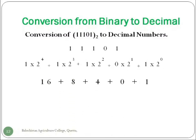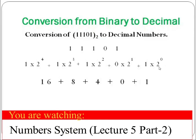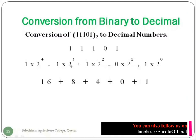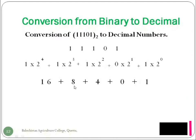So let's calculate it. In mathematics, it is a rule that any number whose power is 0 will be equal to 1. So 1 times 1 is equal to 1. 2 times 0 is 0. 2 raise to the power 2 means 2 times 2, its result will be 4. 2 times 2 times 2 is 8, and 2 times 2 times 2 times 2 will be 16. Adding all these results, we will get 29, which is the decimal number.